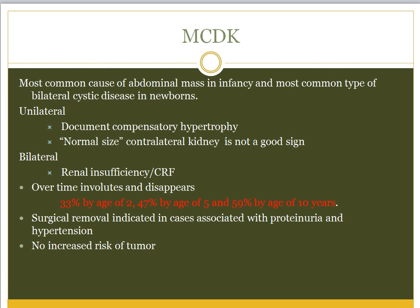Management: always do VCUG to rule out reflux in the contralateral normal kidney, and if present, treat with prophylactic antibiotics and surgically if it does not resolve. Monitor with serial ultrasounds every six months — they involute over time: 33% by age two years, 47% by age five years, and 59% by age ten years. Surgical removal is indicated when there is associated proteinuria or hypertension. There is no increased risk of tumorigenesis in these cysts.